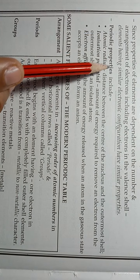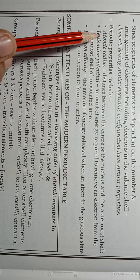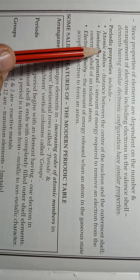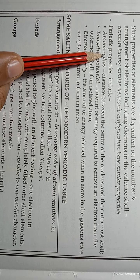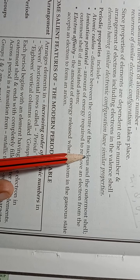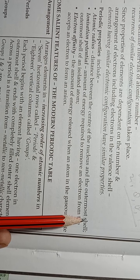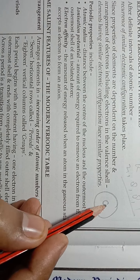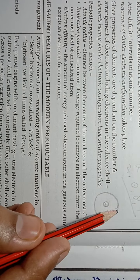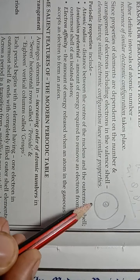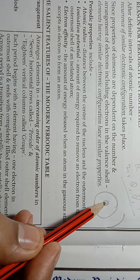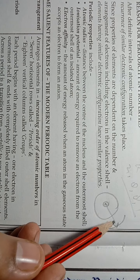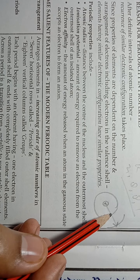Periodic properties include atomic radius, ionization potential, and electron affinity. Atomic radius is the distance between the center of the nucleus and the outermost shell. If we consider the structure of an atom with a nucleus and an outermost shell, the distance from the center of the nucleus to the outermost shell is considered as the atomic radius.